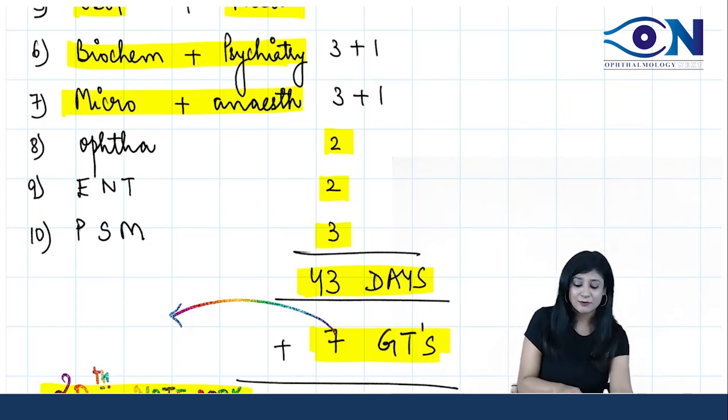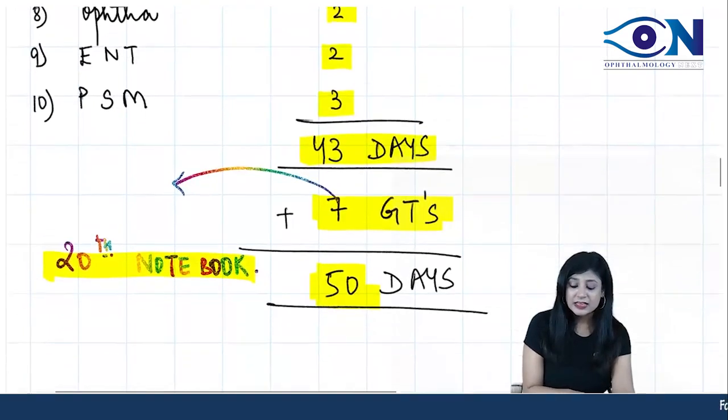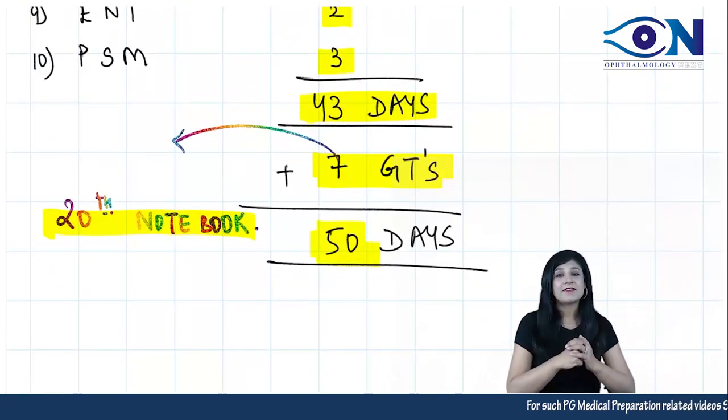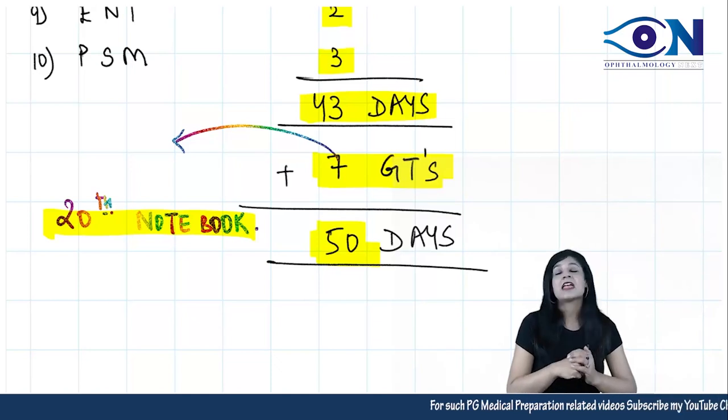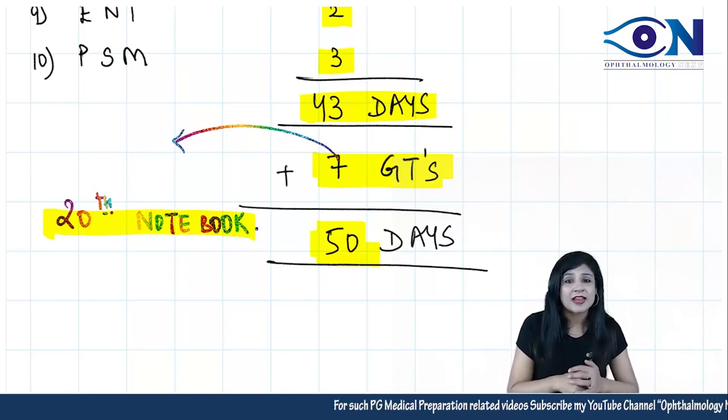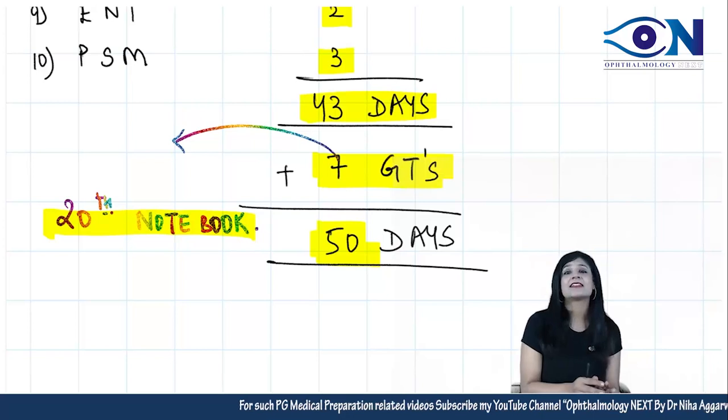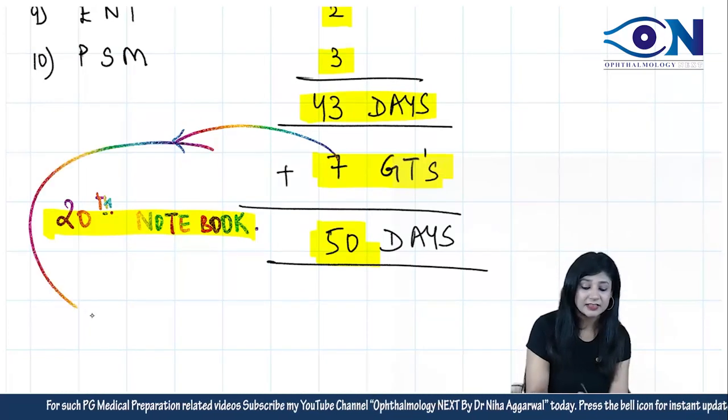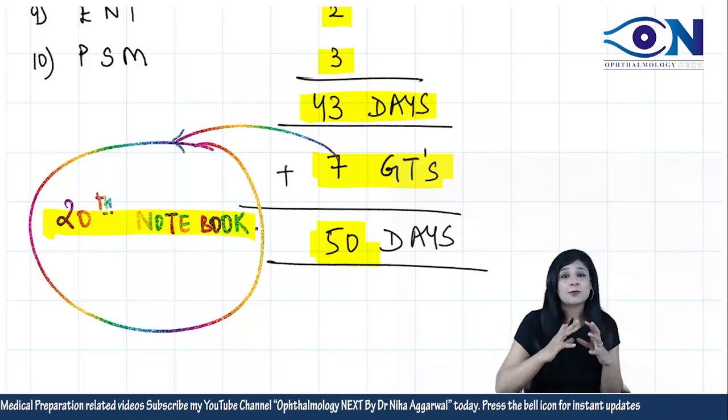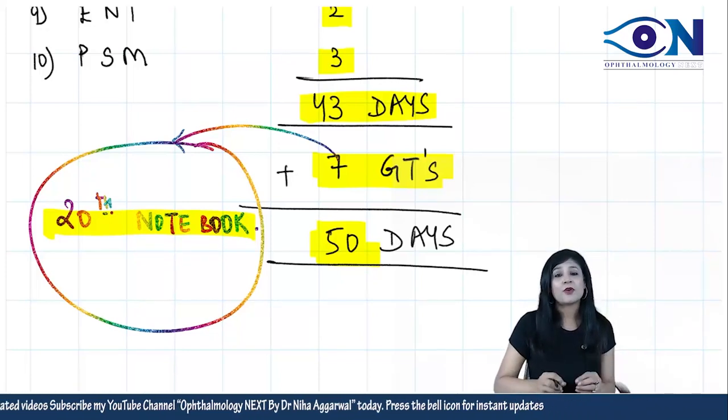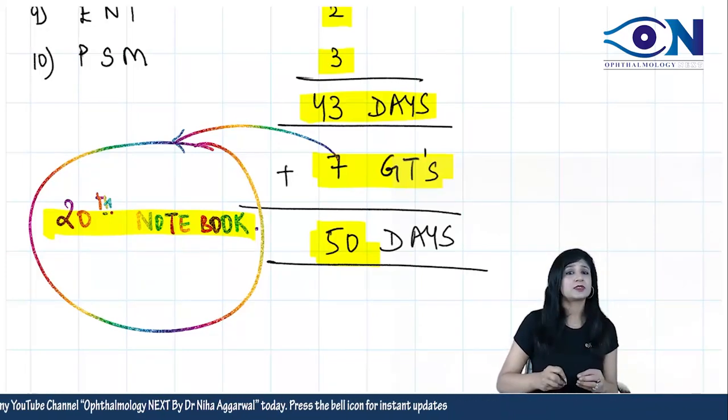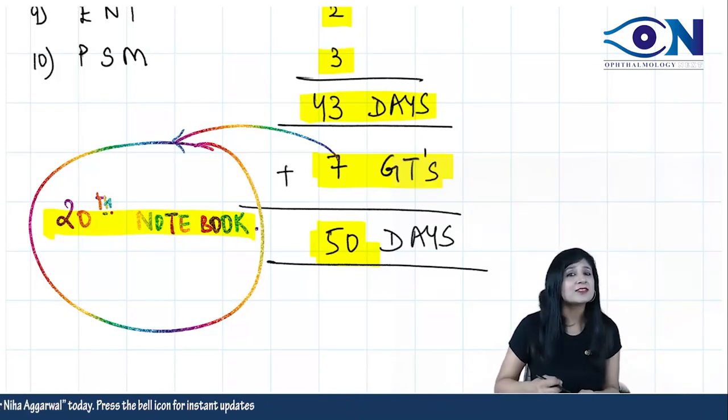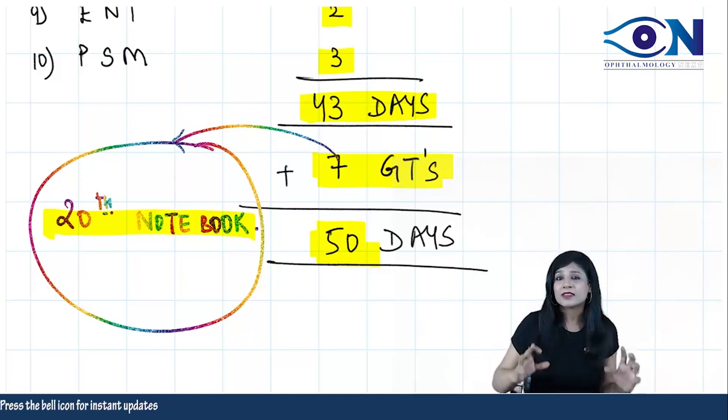If you see, this total makes 43 days. Now we still have seven days in which you are going to give your grand test, analyze it, and cover everything in this 20th notebook. Keep noting down your weaknesses, which topics to see again, which questions to see again, and you are there with this whole list.